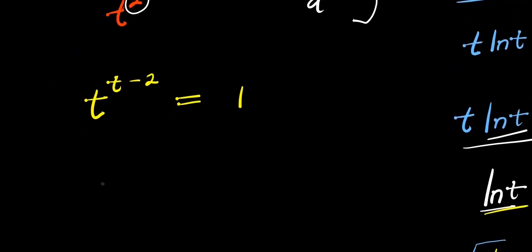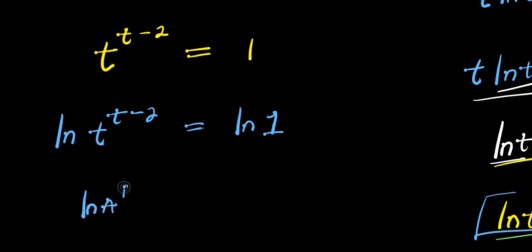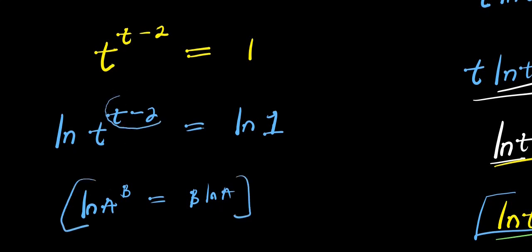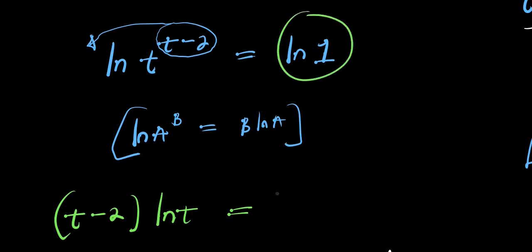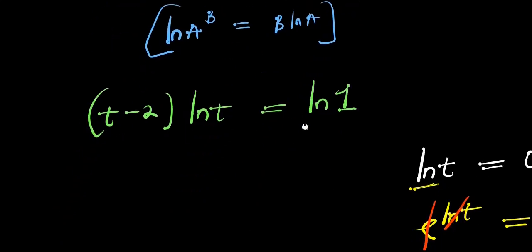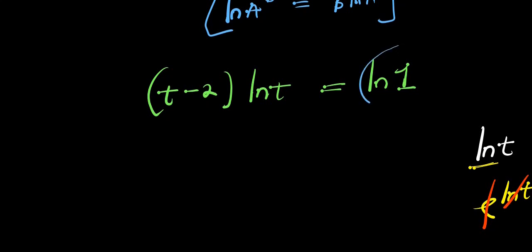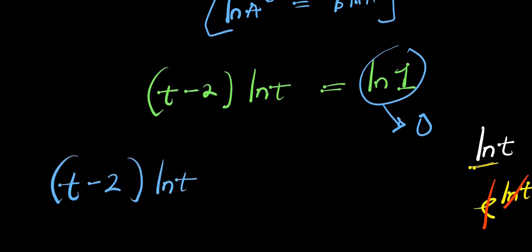Now we apply natural log: ln of t^(t minus 2) equals ln 1. Using the log power rule, (t minus 2) comes in front: (t minus 2) times ln t equals ln 1. And we need to know that ln 1 is zero, so (t minus 2) times ln t equals zero.